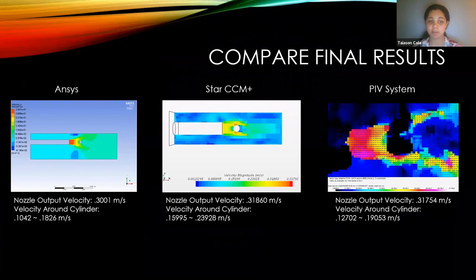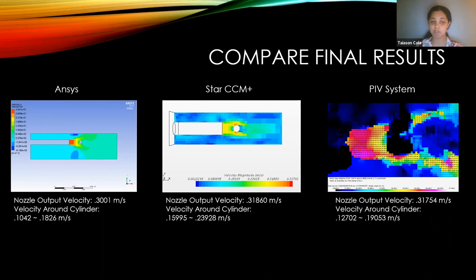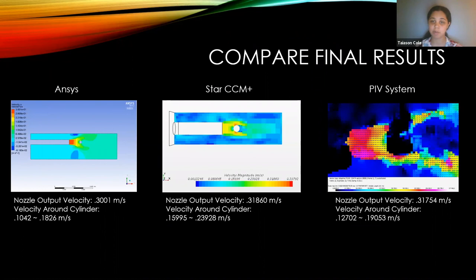After getting the final results from the ANSYS and STAR-CCM programs, they were compared to the PIV system results. Outside of some blockage from the light screen, it was shown that the velocity around the cylinder, as well as coming from the nozzle, are visually similar and within range. There were some challenges in learning the simulation programs, as many of us were new. However, we were able to successfully get them to match the results.